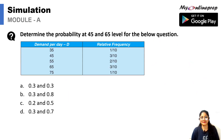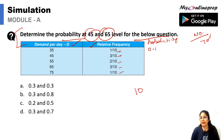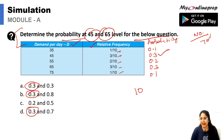Here we have to determine the probability at the 45 and 65 demand levels. We have the demand and relative frequency given. The probability equals the number of observations upon the total observations. So: 1/10 = 0.1, 3/10 = 0.3, 2/10 = 0.2, then 0.3 and 0.1. The probability at the 45 and 65 level would be 0.3 for both.